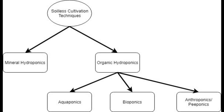Anthroponics could entail the combined type 1 and type 2 human waste, which of course has certain liabilities and dangers associated with it. Whereas peoponics is just a subset of that, using only the human urine part — making it much more user-friendly, tolerable, and less dangerous in terms of bacteria that might be harmful to us.